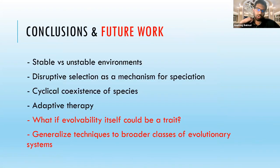The main conclusions: we've talked about stable and unstable environments. Stable environments favor slower evolving species, unstable environments favor faster evolving ones. We've looked at disruptive selection as a mechanism of speciation by inducing species to occupy different niches to avoid competition. We've looked at the cyclical coexistence of species with different evolvabilities through the IDH. And we've carried out this coexistence indefinitely through an adaptive therapy regimen to promote coexistence of species.